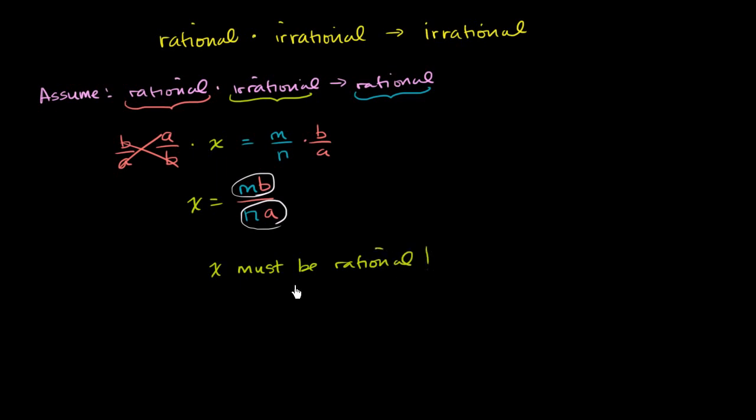So now we have x must be rational. And that is our contradiction because we assumed that x is irrational. And so therefore, since this assumption leads to this contradiction, leads to this contradiction...